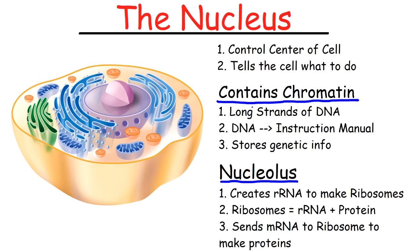First, we have the nucleus, which is the command and control center of the cell. It tells the cell what to do — how to grow, what proteins to make, what lipids to produce, and things like that.